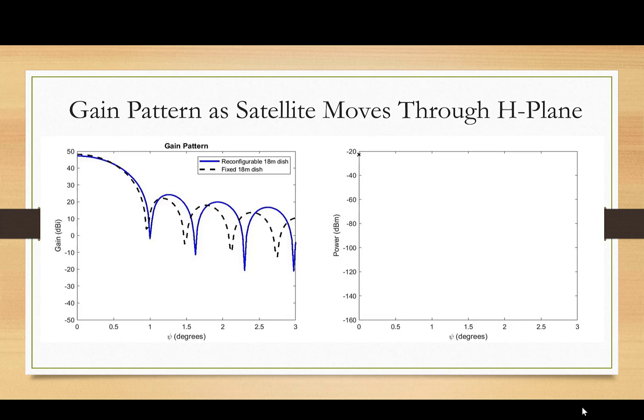Now by watching the right-hand plot, you can get a sense of where the source is in terms of its angular position over time. The source starts at 0 degrees and ends at 3 degrees.